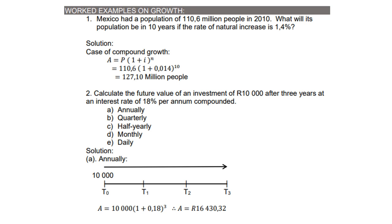Calculate the future value of an investment of R10,000 after three years at an interest rate of 18% per annum, compounded annually, quarterly, half-yearly, monthly, and daily. For annually: using the timeline from t0 to t3, A = 10,000 × (1 + 0.18)^3, giving an answer of R16,430.32.